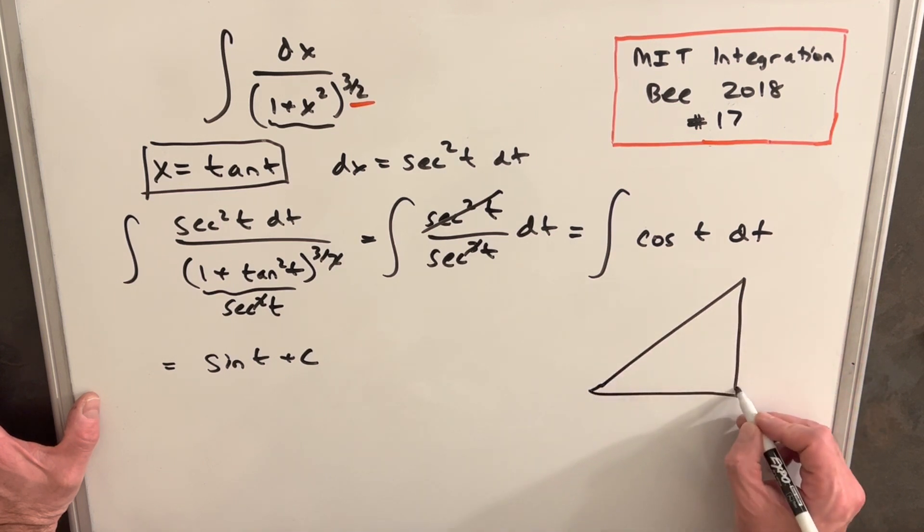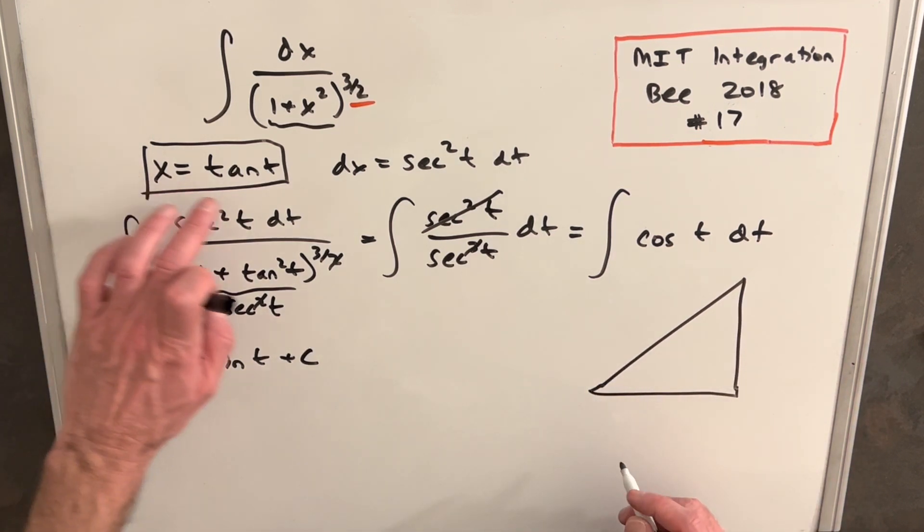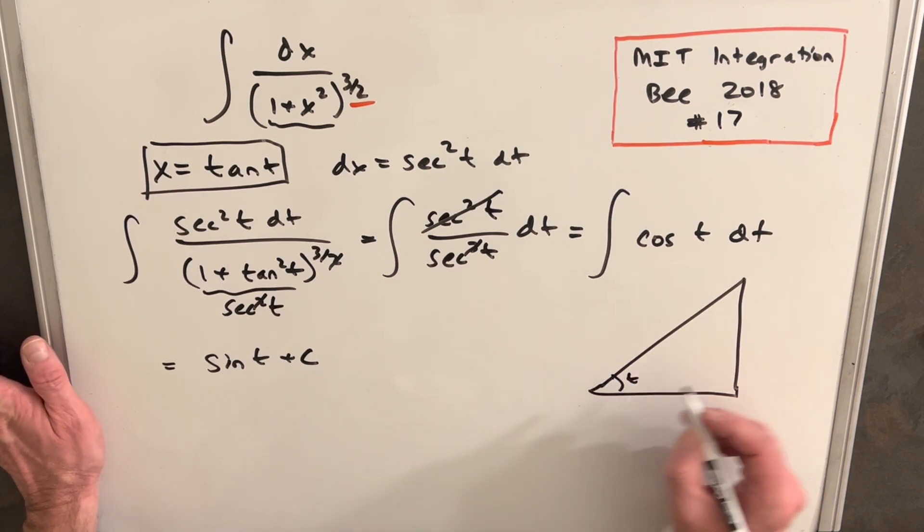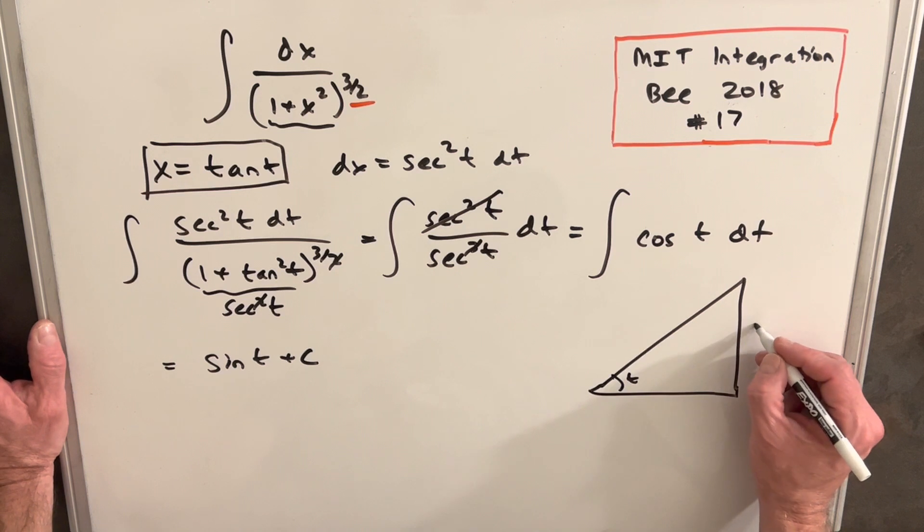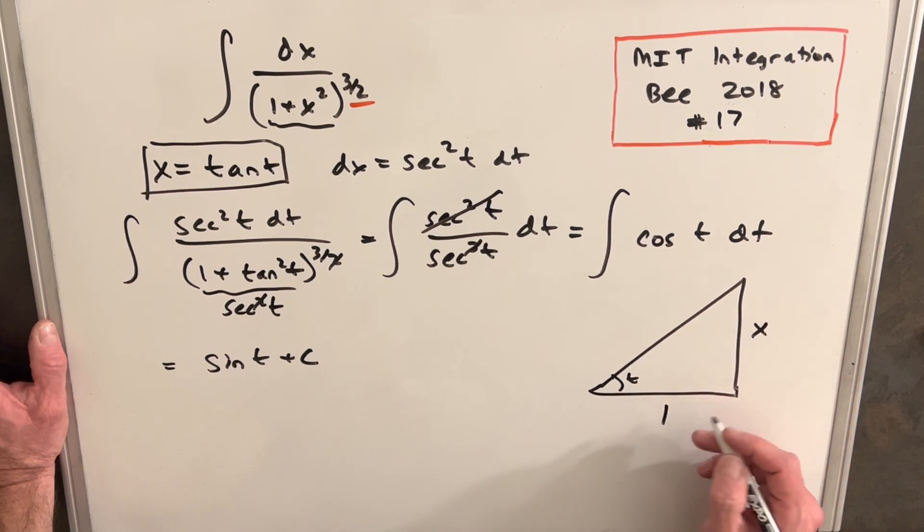So we draw our triangle. We're saying our angle is t. And the value we're going to get is x when we have tangent, which is opposite over adjacent. So the way to get x is x over one.